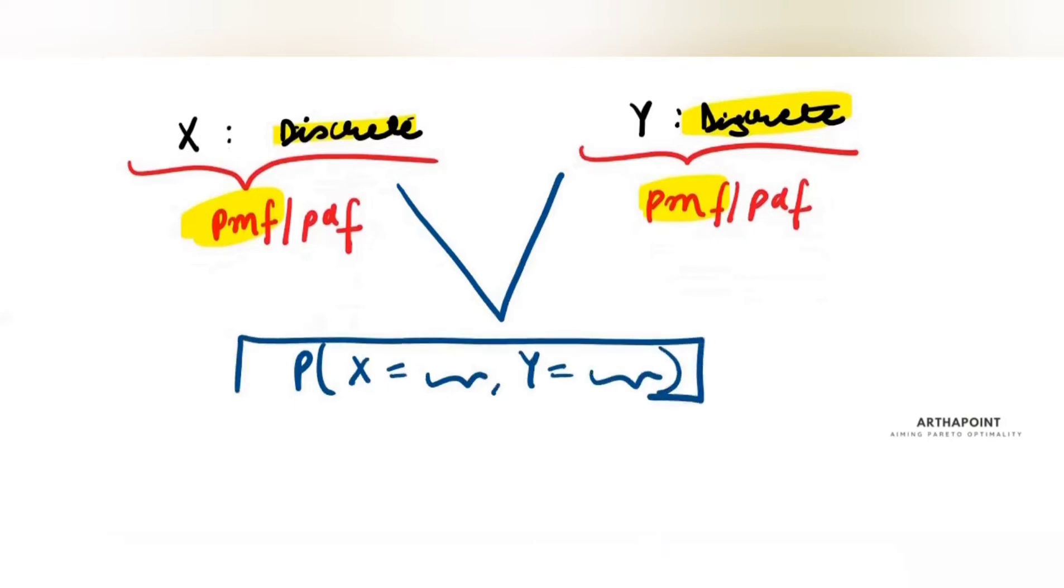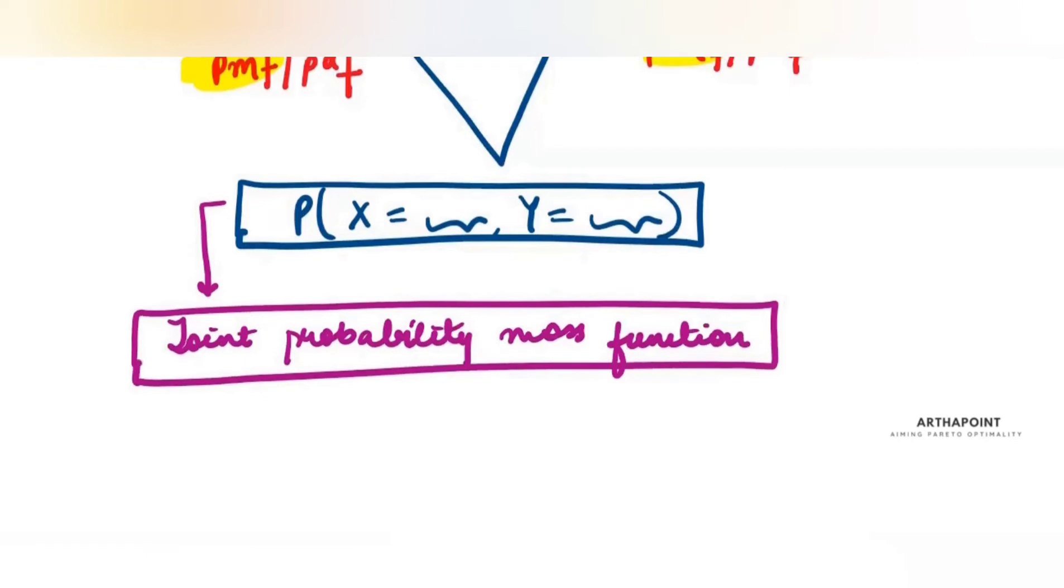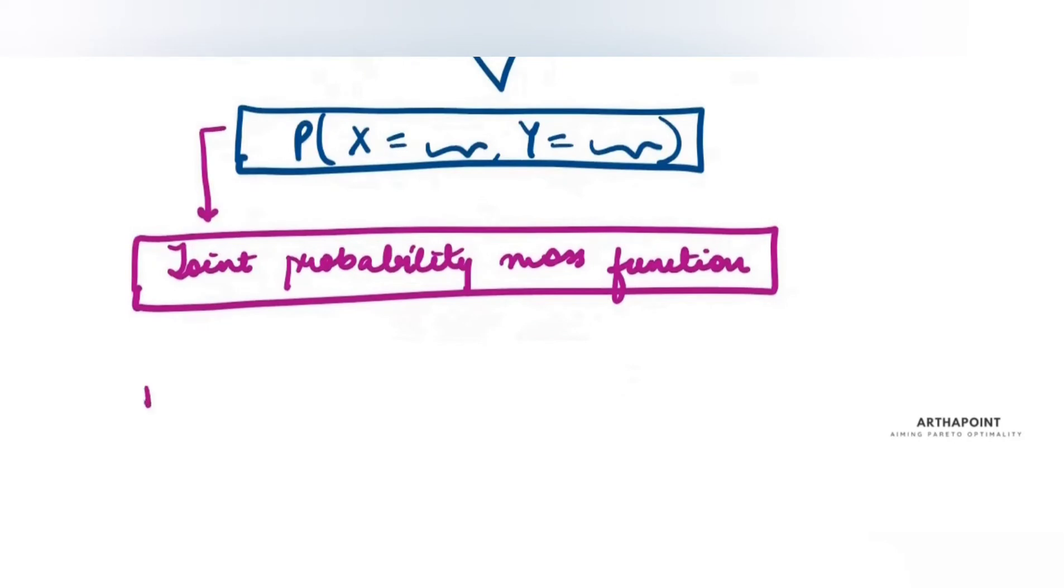I am clubbing them together. When I do that, when I club two discrete random variables together, then that is known as a joint probability mass function. What is a joint probability mass function? A joint probability mass function, P(X,Y), is that probability that X is a certain number and probability that Y is also a certain number.